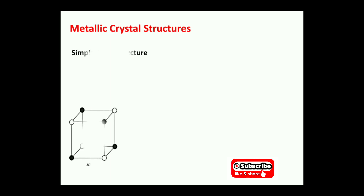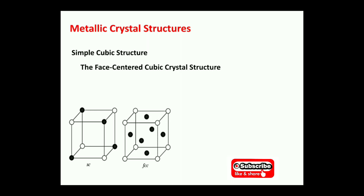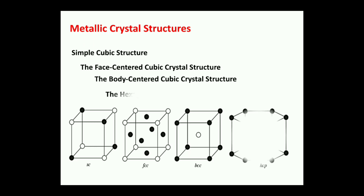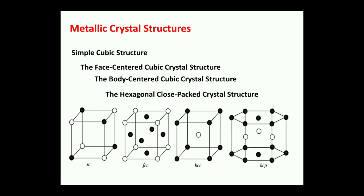The first structure is simple cubic: a cube having eight corners, each containing one atom. The second is face-centered cubic (FCC): eight corner atoms plus one center atom on each face of the crystal. The third is body-centered cubic (BCC): eight corner atoms plus one extra atom at the center of the body.